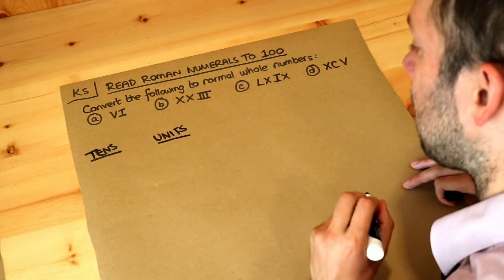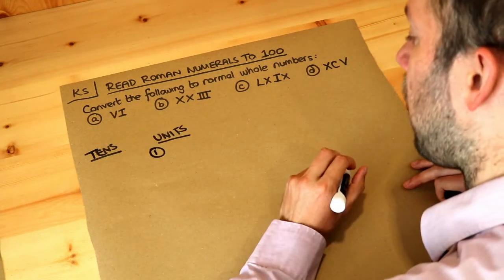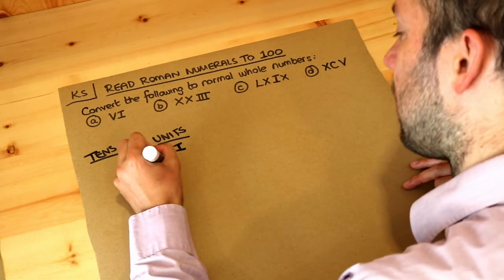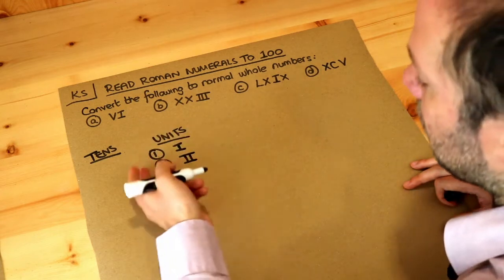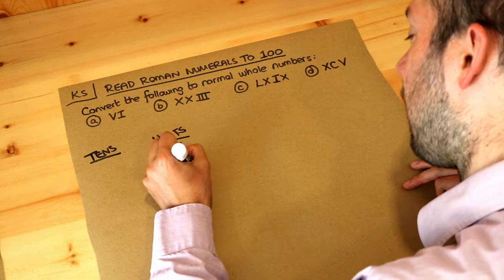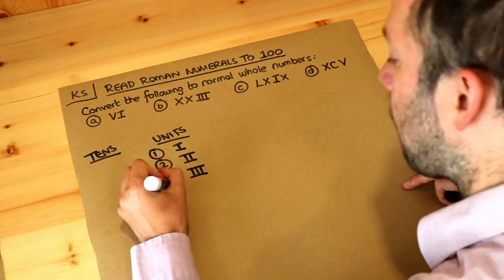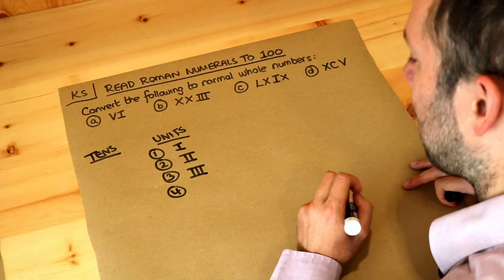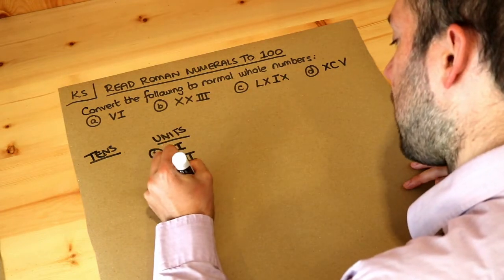Let's start with the units first. If we want to represent one in Roman numerals it's just i. If we want to represent two then it's ii — two i's to represent two. And then three, you might guess where this is going, you have three i's like that. However, for four, we start to get a few too many i's and it becomes difficult to count, so what we actually have is iv.